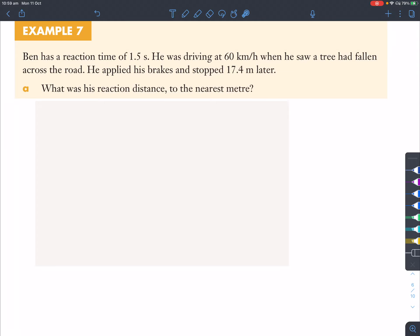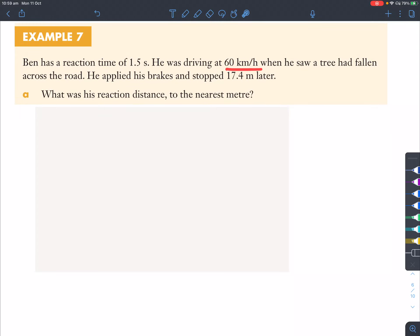Now, in example seven, Ben has a reaction time of 1.5 seconds. He was driving 60 kilometers per hour when he saw a tree had fallen across the road. He had applied his brakes and stopped 17.4 meters later. What was his reaction distance to the nearest meter? So, when you draw your distance, speed, and time triangle, if we're finding out what distance is, that's basically speed times by time.